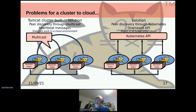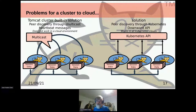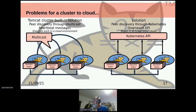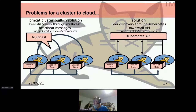The first problem to solve is Tomcat session sharing between Tomcat instances. In the case of multicast, the multicast port and IP is used to discover the other Tomcat instances, and then they replicate session data between each other. In the cloud, we need at least two ways to find out who the other Tomcat instances are. The first easy one is to use the Kubernetes API to find the other Tomcat — the Tomcat will find the others, get their IP addresses, and then use TCP to exchange session data.